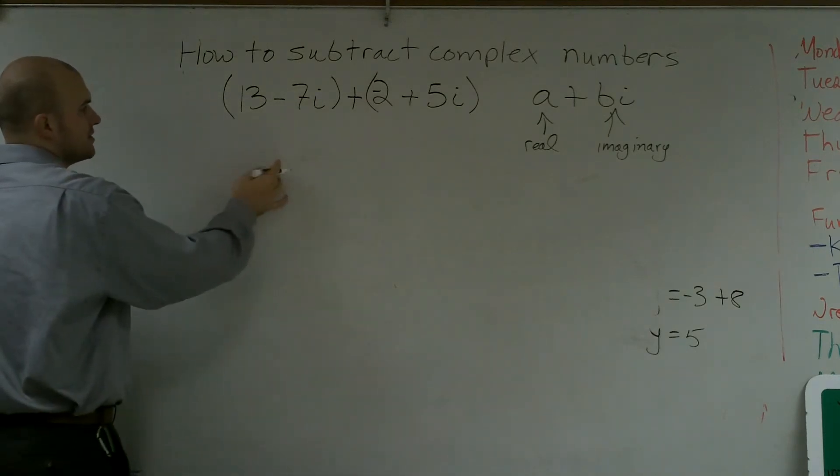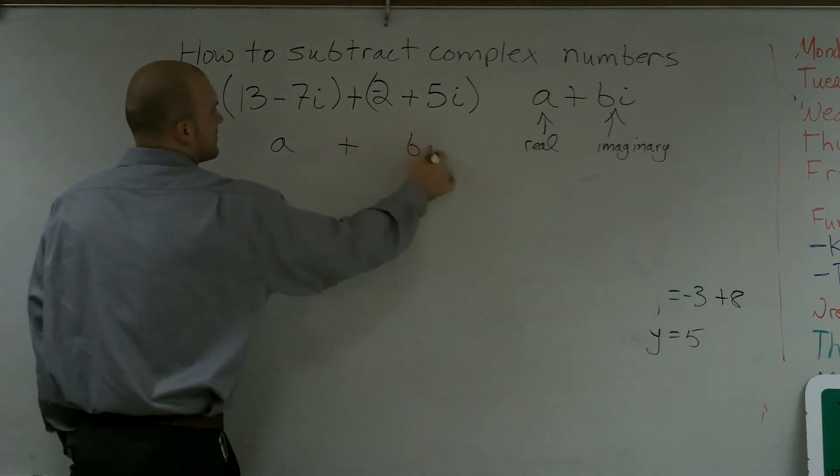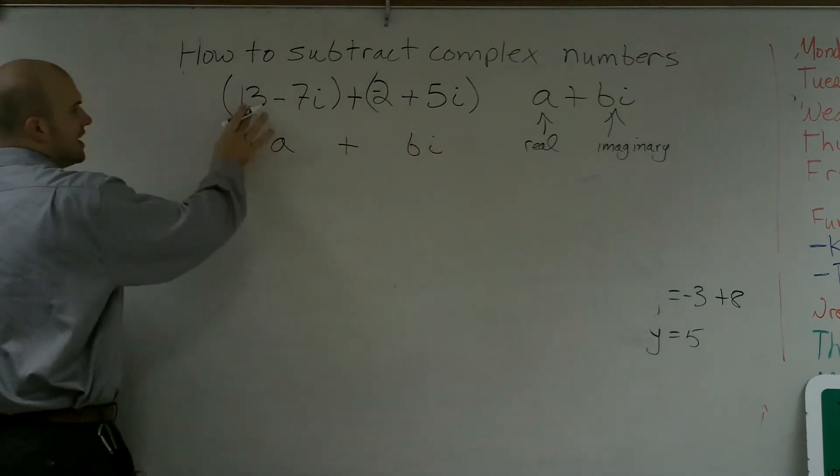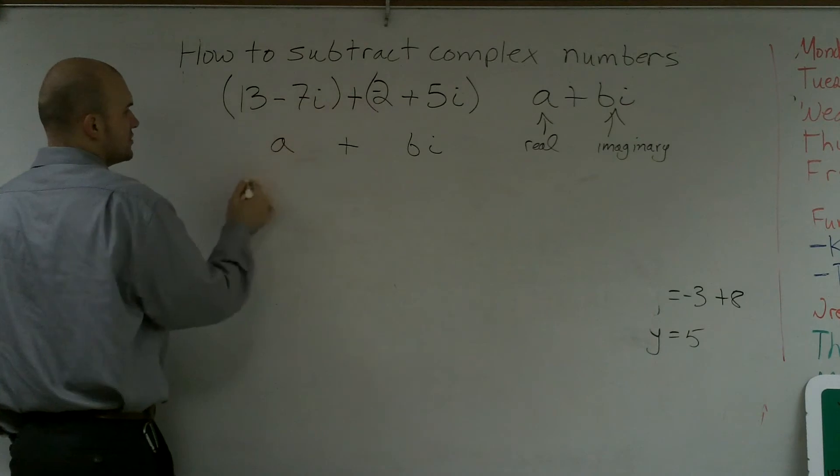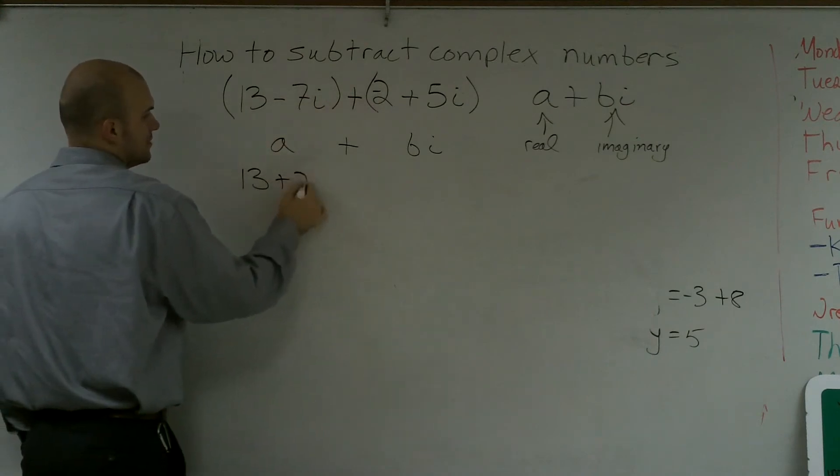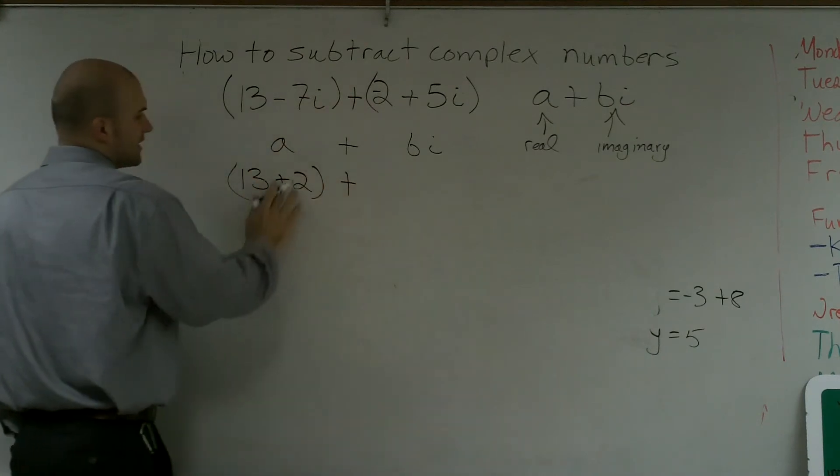Then, what I'm going to do is put it in a plus bi form. So I have my a terms, which is 13 and 2. So I'll do 13 plus negative 2, which is really minus 2.